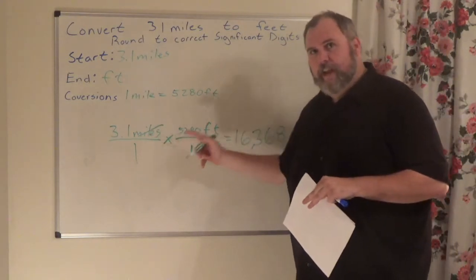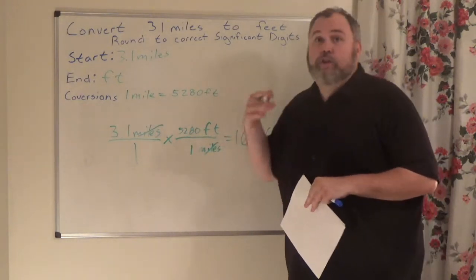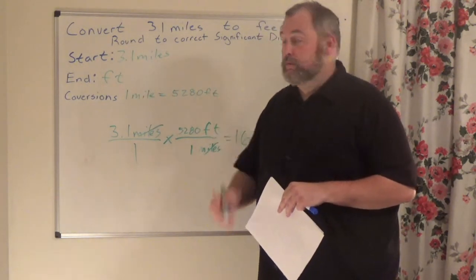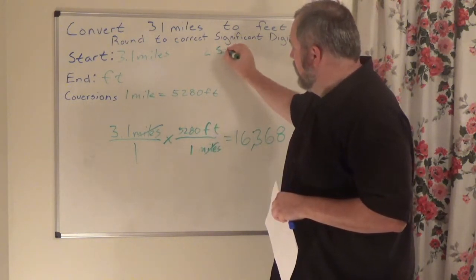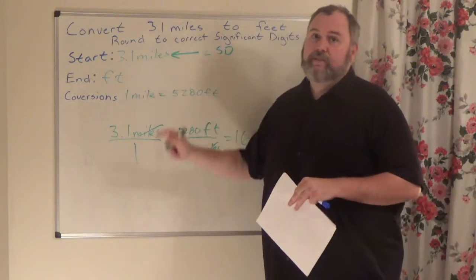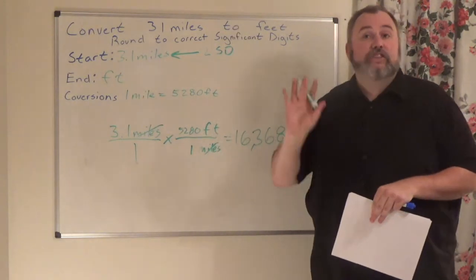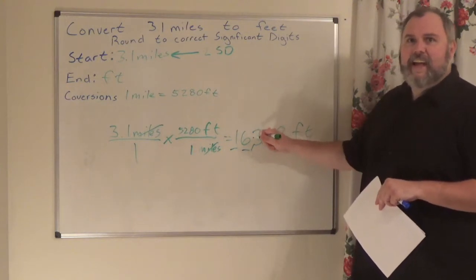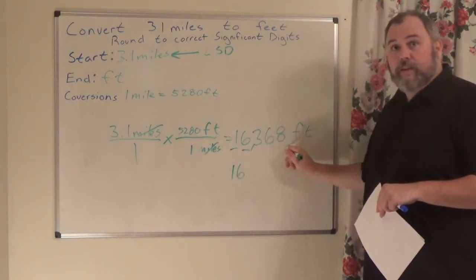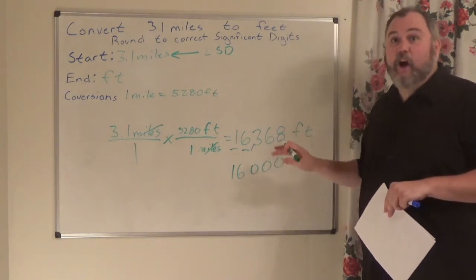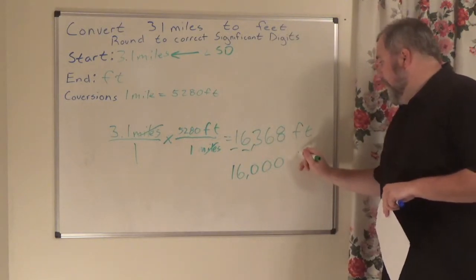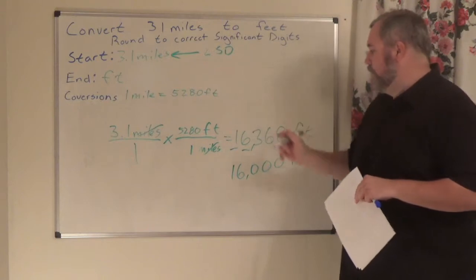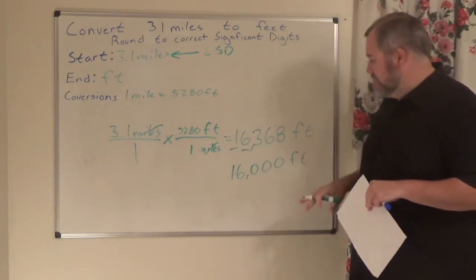Your instinct might be to count each significant digit in the answer — don't do that. Look at what you started with. How many significant digits were in 3.1? Two. So we're going to round to two significant digits — only look at where you started. Rounding to two significant digits: one, two. The three tells that six to stay the same, all the other numbers become zeros. Since this is a whole number, those zeros do not get dropped. Our final answer is 16,000 feet. If I told you not to round, 16,368 would be the answer; but with significant digits, it's 16,000 feet.